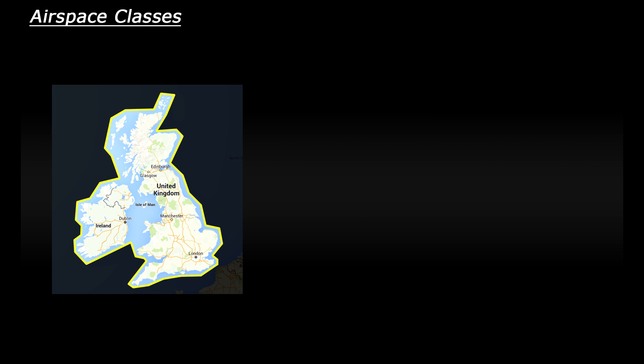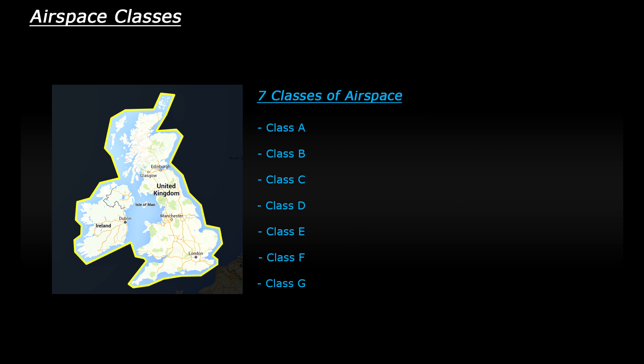Today I'm going to talk about airspace classes. You've probably come across different classes of airspace in your flight sim or aviation experience — class A, class B, class C. Basically, the atmosphere above a country is controlled by that country; that piece of atmosphere is that country's airspace. A country's overall airspace can be divided into different classes, and there are seven classes in total, ranging from class A through to class G.